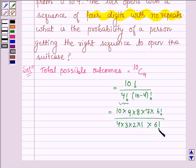That is, n minus 4 equals 6 factorial. On canceling and simplifying this, we get 5040 as the number of possible outcomes.